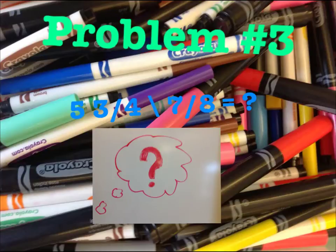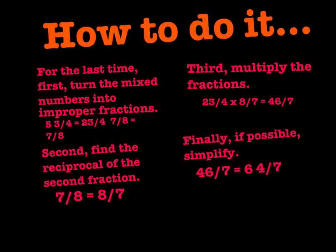Here's the last problem: 5 and 3 fourths divided by 7 eighths equals... First, turn the mixed numbers into improper fractions. 5 and 3 fourths would equal 23 over 4, and 7 eighths would stay the same. Second, find the reciprocal of the second fraction. 7 eighths would equal 8 over 7.